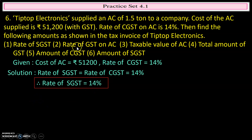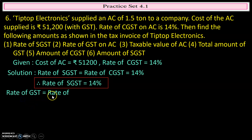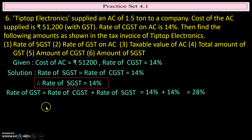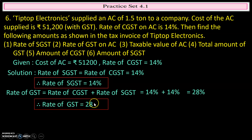The next quantity we have to find is the rate of GST. Rate of GST equals rate of CGST plus rate of SGST, which equals 14 percent plus 14 percent. We get 28 percent. Therefore, the rate of GST is equal to 28 percent.